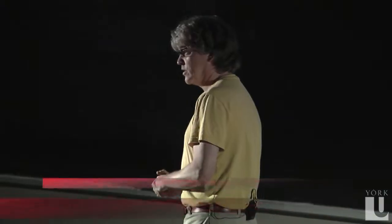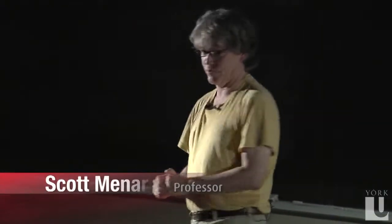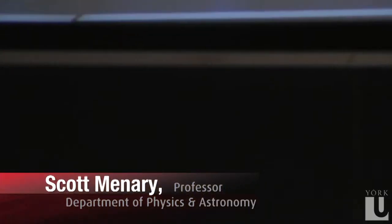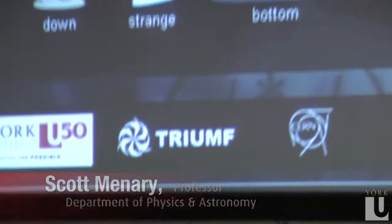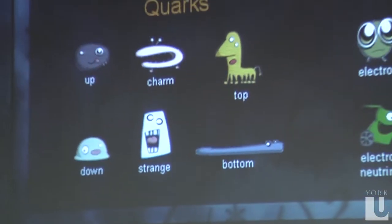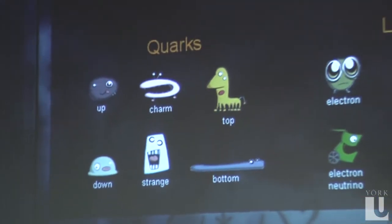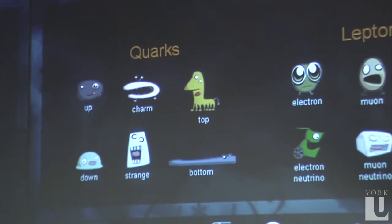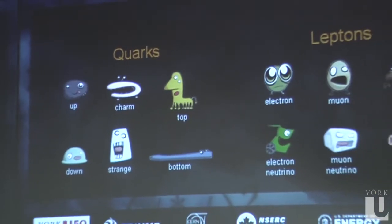The fundamental entities in the world are quarks and these electron-like things called leptons. The people at the Department of Energy gave me this slide — I don't know if that means anything to you — but there are different types of them.